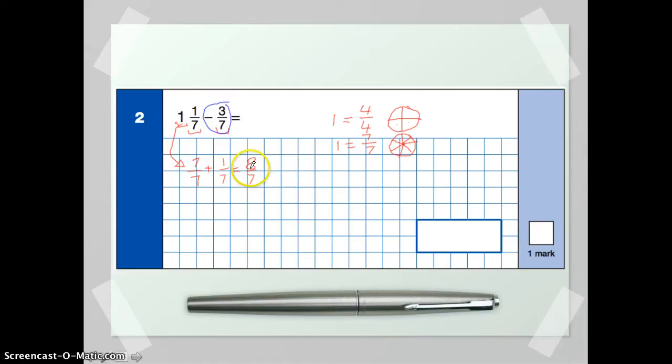So we've got our eight-sevenths. If you find it more helpful, you can always drop the fraction down onto another line. So we need to put our eight-seventh underneath there. And we're going to subtract three-sevenths. Subtract three over seven.